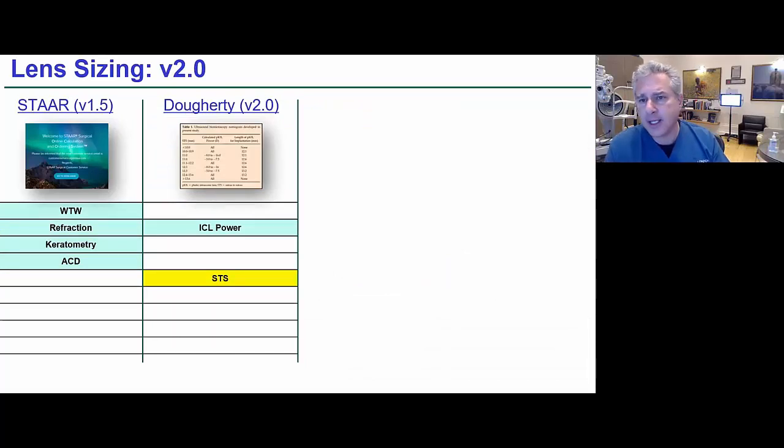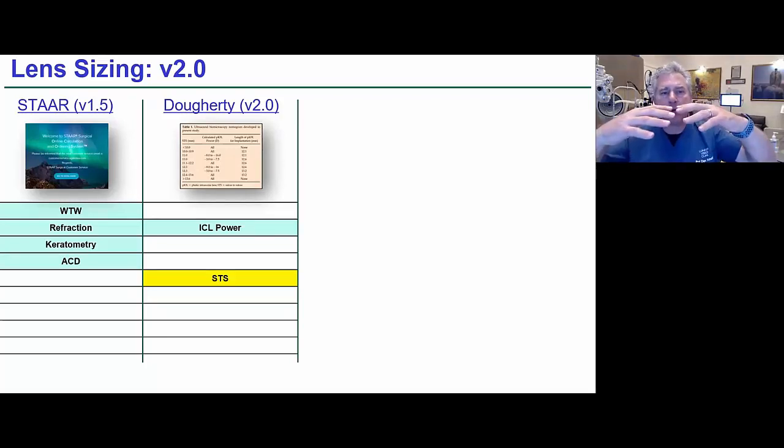Lovisolo had been doing this in the late 90s already. Doherty published the paper from his FDA data, which the U.S. has been using diligently. His lookup table includes the ICL power, which tells you about the mechanics of the lens, the bendability of the lens. The higher power ones are thinner in the center, so they bend more.